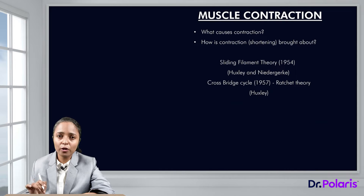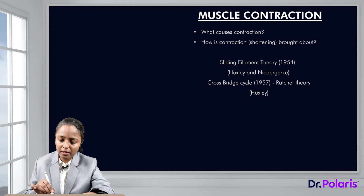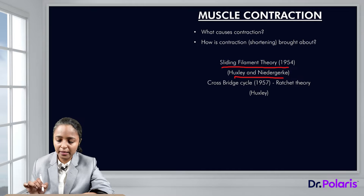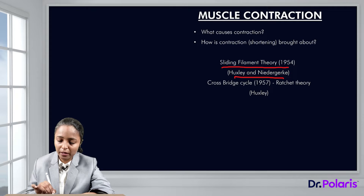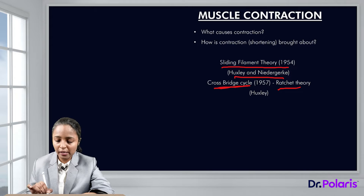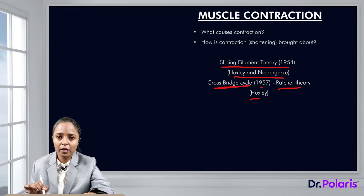Contraction is explained by the sliding filament theory, given by Huxley and Niedergerke in 1954. Further, how these filaments are sliding is explained by the cross-bridge cycle, that is the ratchet theory, again given by Huxley in 1957.